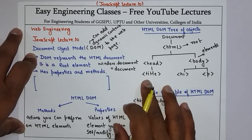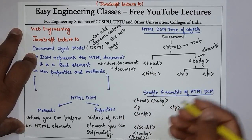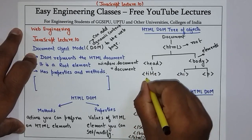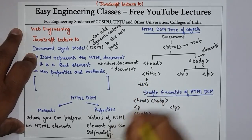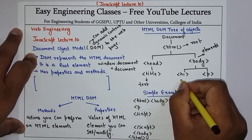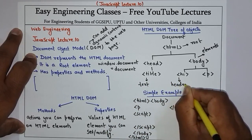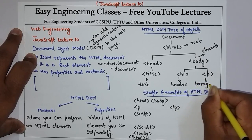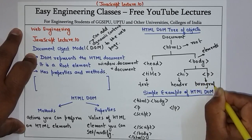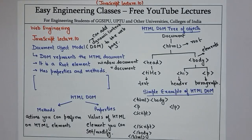Title, h1 और p — इनके कुछ attributes हैं, कुछ properties हैं। जैसे title का आप क्या कर सकते हो — आप इसका text set कर सकते हो। Similarly h1 is used as a header, और यह paragraph है जिसमें आप कुछ भी content add कर सकते हो display करने के लिए। तो यह basic हमारा HTML DOM tree of objects होता है।